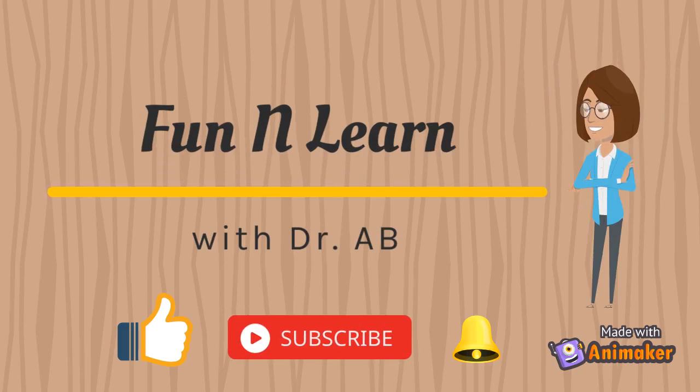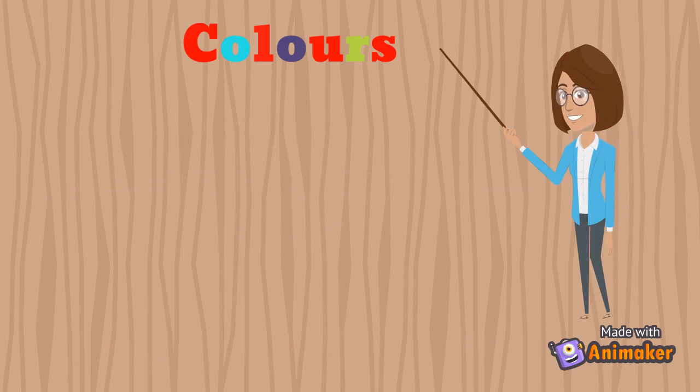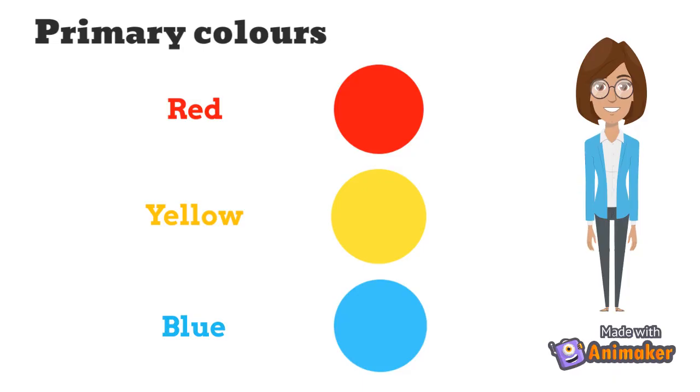Let us start today's video. In today's video, we will discuss about colors. Colors are of three types: primary colors, secondary colors, and tertiary colors.